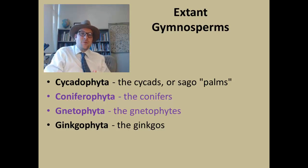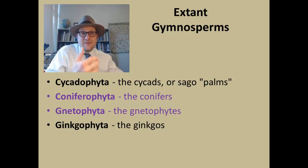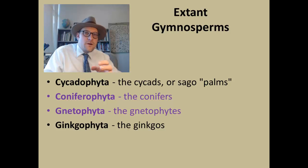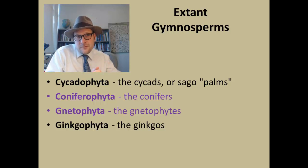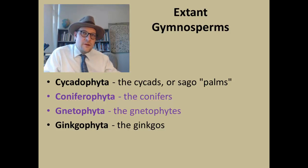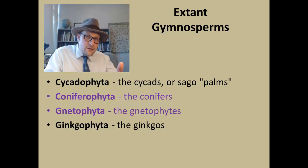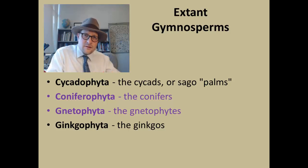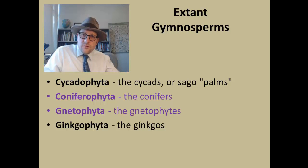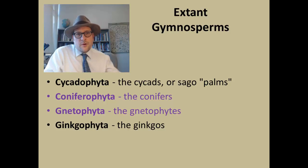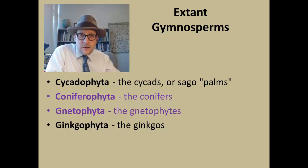In the previous lecture we talked about the fossil record of cycads. In this lecture we will focus on two groups of gymnosperms that were diverse in the Mesozoic: the Coniferophyta, the conifers, and the less diverse but not less exceptional gnetophytes. In lecture 35 we will go on to the fourth group of gymnosperms, the Ginkgophyta, which includes living ginkgos.